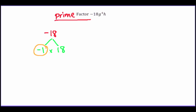Now I'm going to go back to the 18, which is a composite number, and find two factors of 18. Two factors of 18 that I know are 2 times 9 — I know there are others but these are the two I'm using. I can see that 2 is a prime number, so I'm going to circle that to show that it's prime.